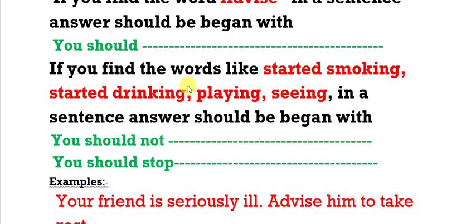If you find words like 'started smoking,' 'started drinking,' 'playing,' 'seeing' in a sentence, the answer should begin with 'you should not' or 'you should stop.'